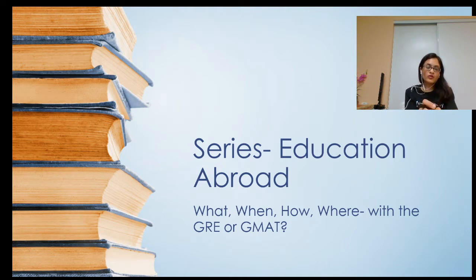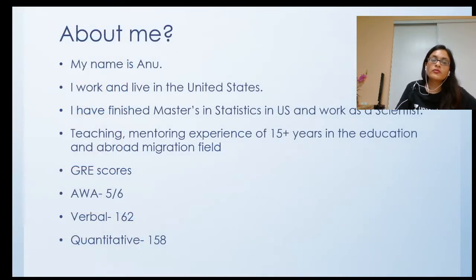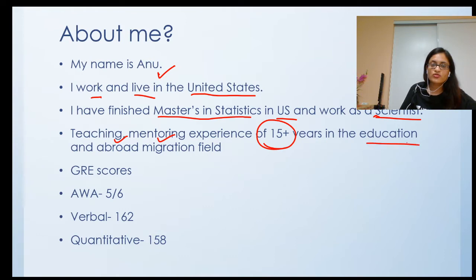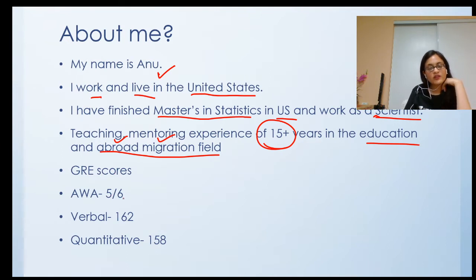These are very many important aspects of your overall abroad journey, which are very important in the long run. First, about me — who am I? My name is Anu. I work and live in the US. I have my Master's in Statistics from the US, and I work as a research scientist. I have been teaching and mentoring for the last 15 years in the education and abroad migration field. These are my GRE scores: AWA was 5 out of 6, Verbal 162, Quantitative 158.